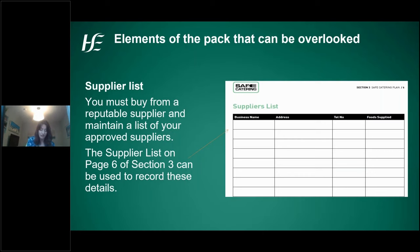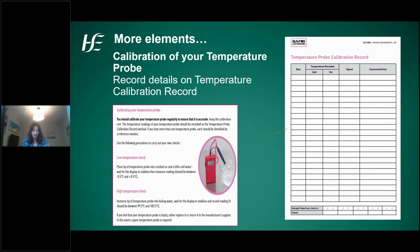The first overlooked element is the supplier list. You must buy from a reputable supplier and maintain a list of your approved suppliers, recorded on page six of section three. The pack gives guidance on what to look at when choosing a supplier, and the list should be reviewed and amended regularly. Another important but often overlooked element is calibration of your temperature probe. You should calibrate your probe regularly to ensure accuracy, recording readings on the temperature probe calibration record. If you have more than one probe, each should have a reference number.